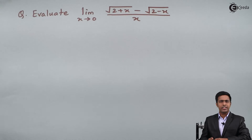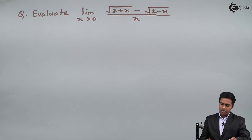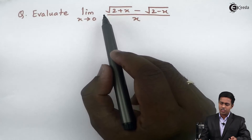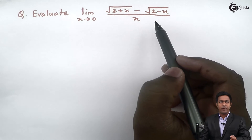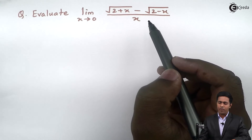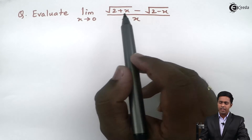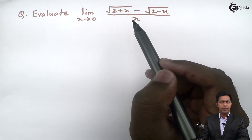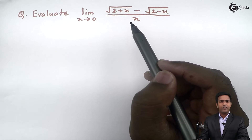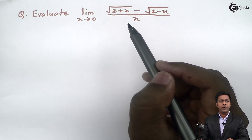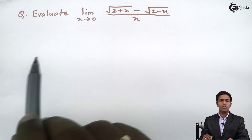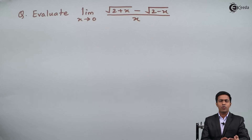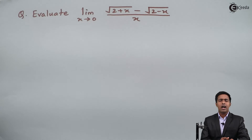Before starting with the solution, if you observe the given function it is an algebraic function. Whenever we have an algebraic function in a limit, we start with the direct method. If the direct method fails — meaning if we get 0 upon 0 — then we look for some other method. So first of all I will start with the direct method.